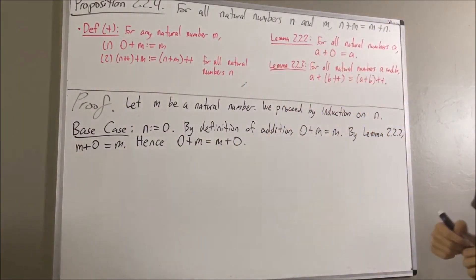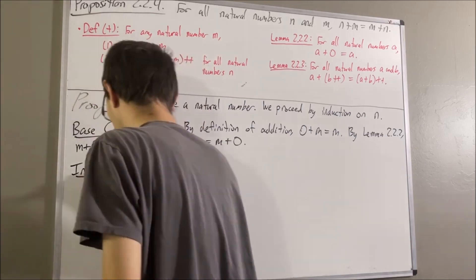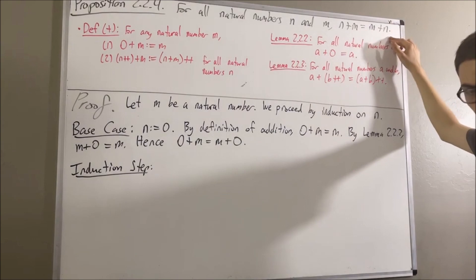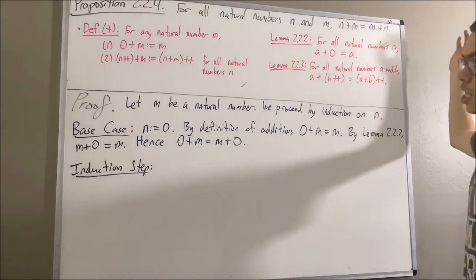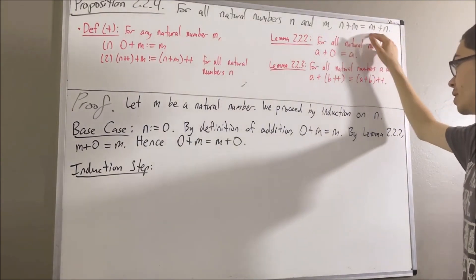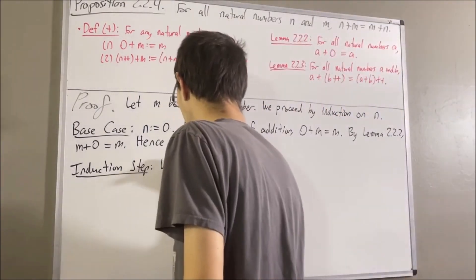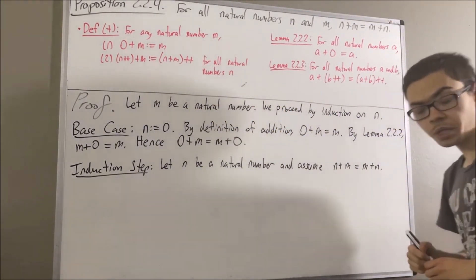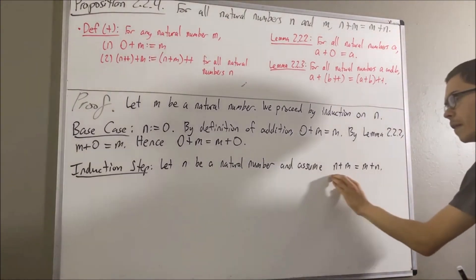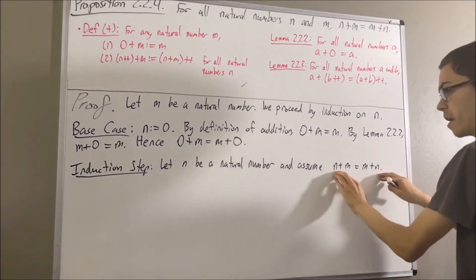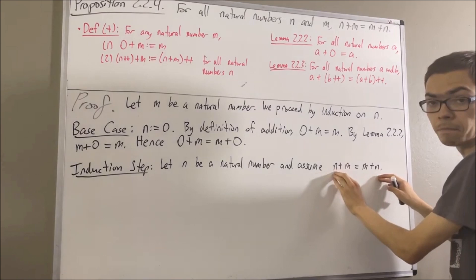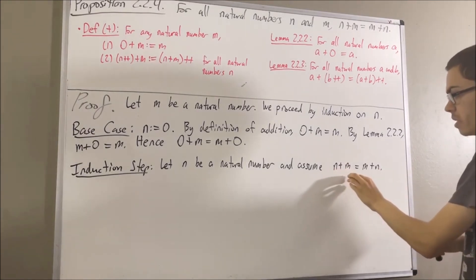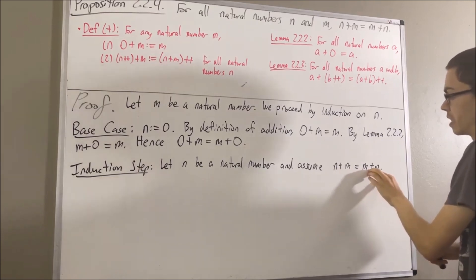Now let's move on to the induction step. In the induction step, we give ourselves an arbitrary natural number n where this is true. So let n be a natural number and assume that n plus m is equal to m plus n. The goal of the induction step is to prove that this is also true if instead of n, we have the successor of n. So really, we're trying to prove that the successor of n plus m is equal to m plus the successor of n.